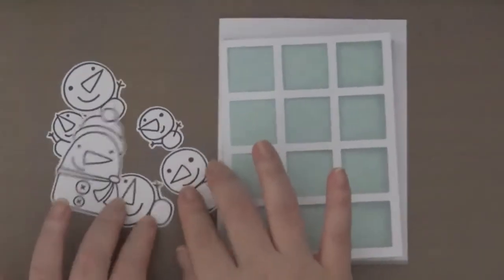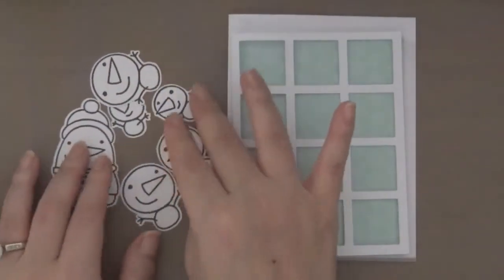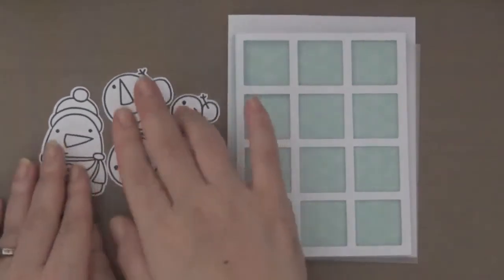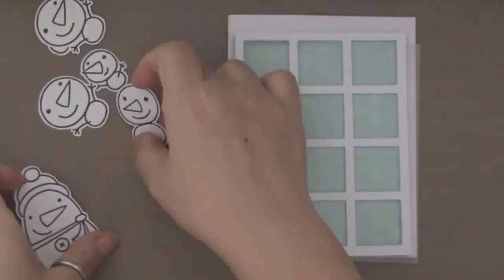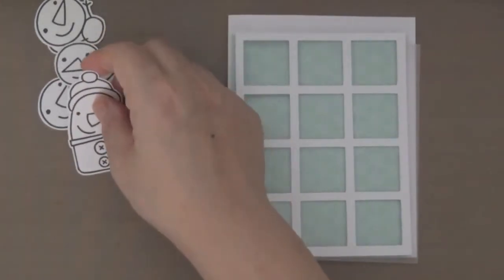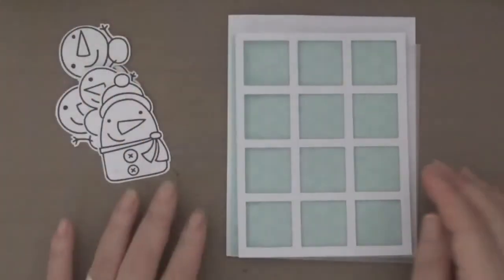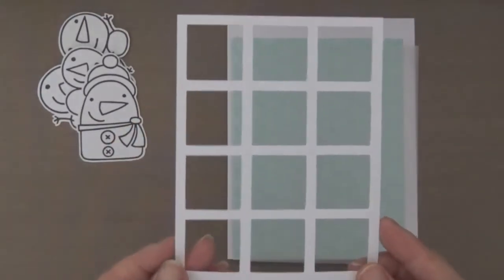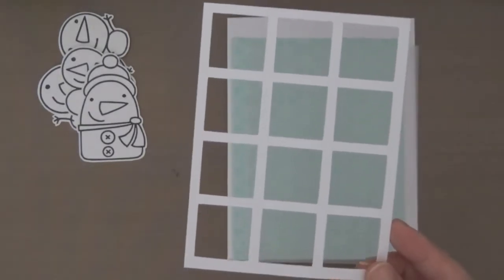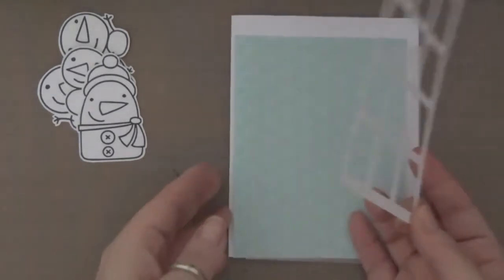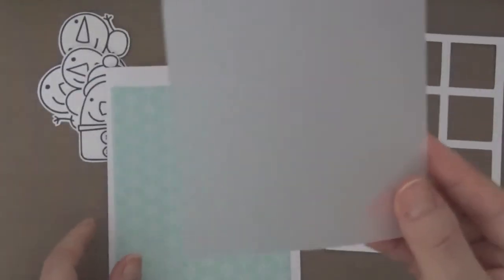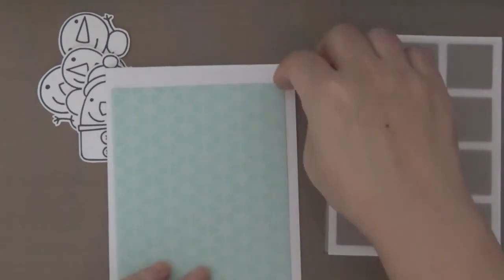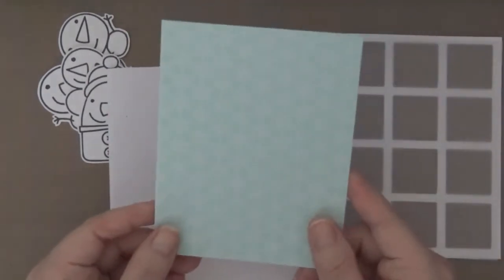I'm going to be using these snowmen that I already stamped and cut using my ScanNCut. This is FreezyFellas, and then I also have this die that I cut out using the MFT square cover-up die, and then I have a piece of vellum cut using MFT so it can be the same size as this, and then I also have a design paper.